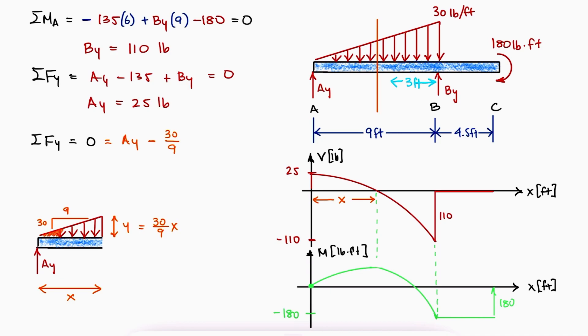The area under the curve of that triangle, which is the equivalent point load, would be one half of the base times the height. Substituting AY, we can solve for the distance X.